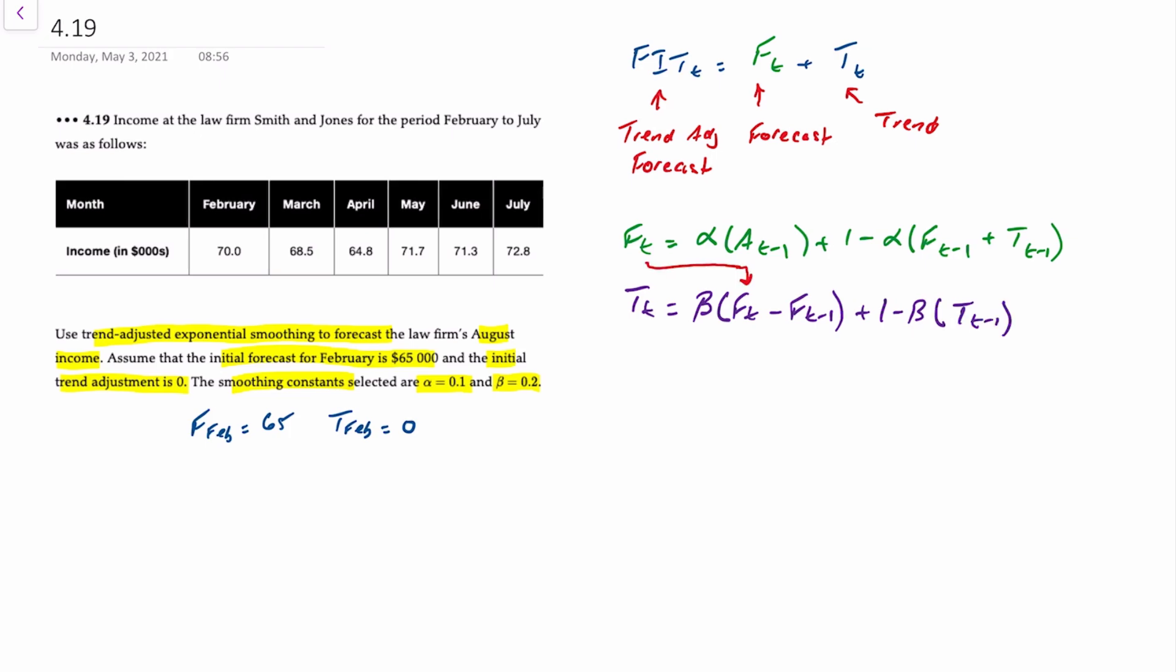It's pretty clear that we have to calculate the forecast for the current period first. In the context of our data and time periods, if we want to calculate the forecast for March, that's going to be equal to 0.1 times the actual for February, plus 1 minus alpha, or 0.9, times the forecast for February plus the trend for February.